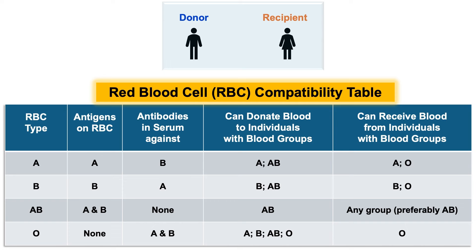Similarly, individuals with blood group B have the B antigen on their RBCs and blood serum containing antibodies against the A antigen. This means that those with blood group B can receive blood only from individuals of groups B or O, with B being the preferable choice, and can donate blood to individuals with type B or AB. Individuals with blood type AB possess both A and B antigens on their RBCs, with their blood serum lacking antibodies against either A or B antigens. Consequently, those with blood type AB can receive blood from any group, with AB being the preferred choice, but cannot donate to any group other than AB.